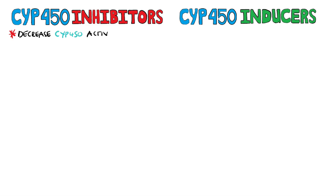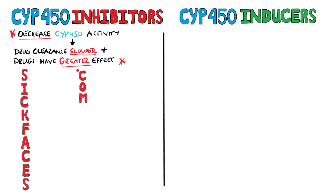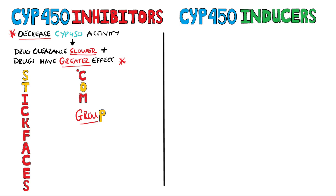We'll do inhibitors first, meaning they decrease the activity of cytochrome P450 enzymes, and so any drug that is metabolized by these enzymes will now be cleared slower and therefore may have a greater impact than expected. The Sickfaces.com group is the traditional mnemonic, but we're making a small change and adding a T to make it Stickfaces.com, which will make it easier to remember that these are inhibitors, as you can see by the word 'stop' spelled in yellow.